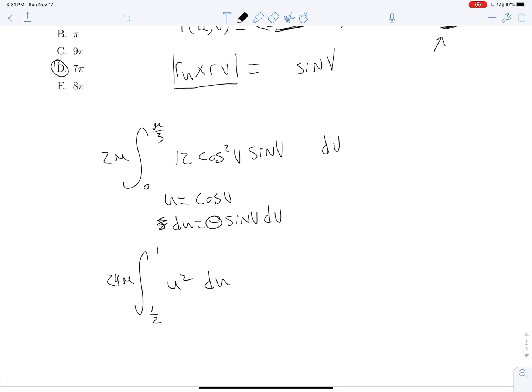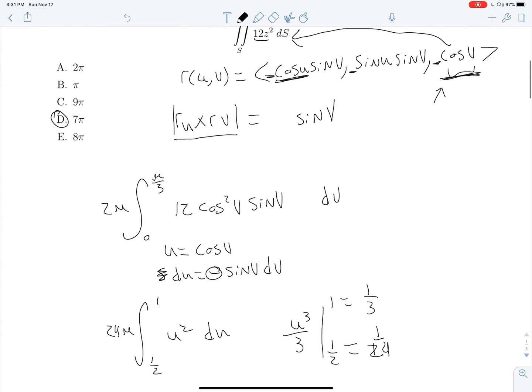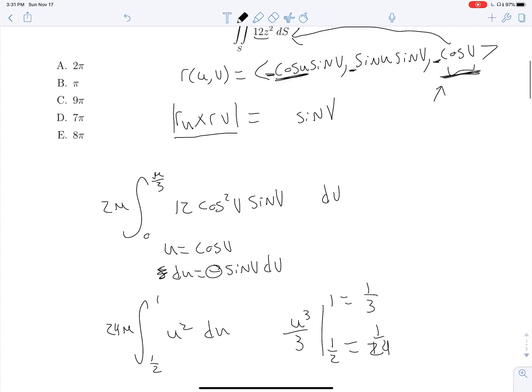And so then this gets pretty easy, U cubed over 3 evaluated on 1 and 1 half, this is going to be 1 third, this is going to be 1 twenty-fourth. And 1 third minus 1 twenty-fourth, we can do that pretty easily. This is going to be 8 twenty-fourths minus 1 twenty-fourth, so 7 twenty-fourths, and then multiply by our 24 pi gives us 7 pi.